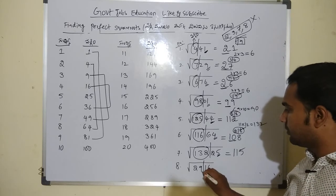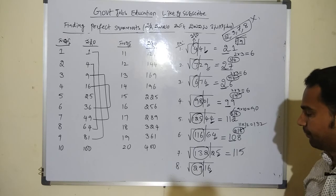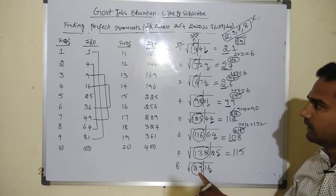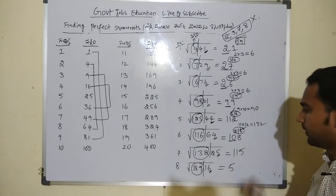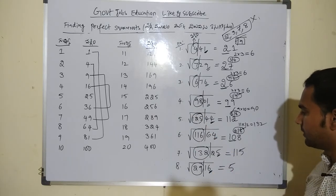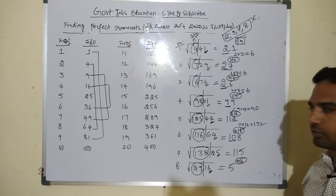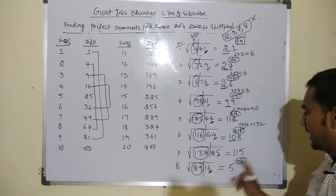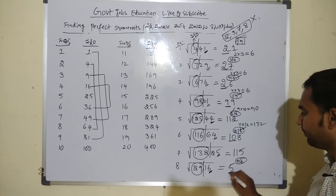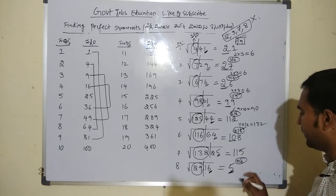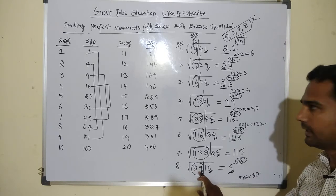Problem: 2916. Left side is 29. The nearest perfect square is 25, so 5 is the root digit. Unit value is 6, giving candidates 4 or 6 — so 54 or 56. 5 multiplied by 6 is 30. Left side 29 is less than 30, so we take the lesser number. The answer is 54.